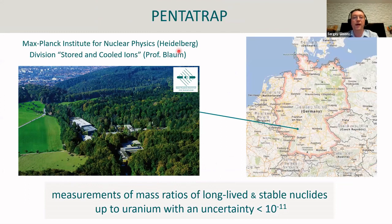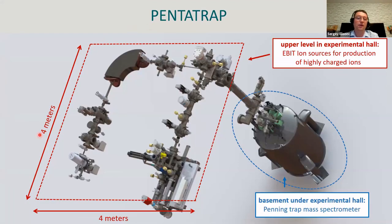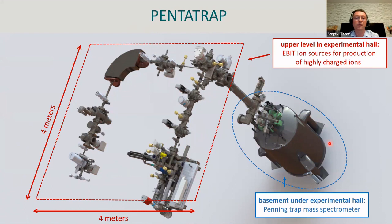Now I move to the main part of my talk: the PentaTrap experiment. PentaTrap is situated at the Max Planck Institute for Nuclear Physics in Heidelberg, in the Division of Stored and Cooled Ions. The major goal is mass ratio measurements on long-lived and stable nuclids up to uranium, with uncertainty below 10⁻¹¹. The experiment is on two levels: on the upper level, two ion sources for producing highly charged ions and ion optics guide ions toward the mass spectrometer; the PentaTrap mass spectrometer is in the basement in a room with controlled environment.